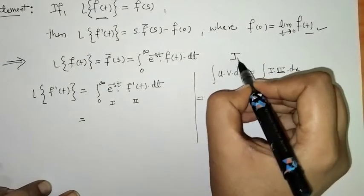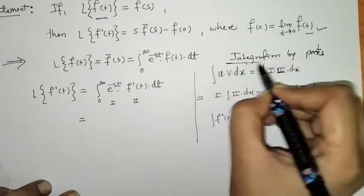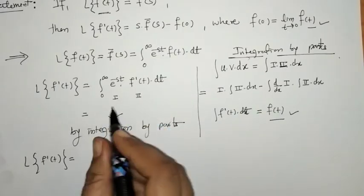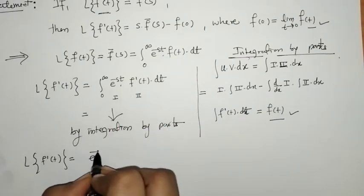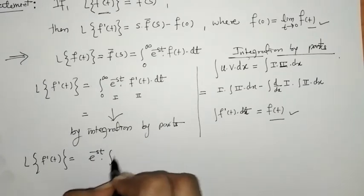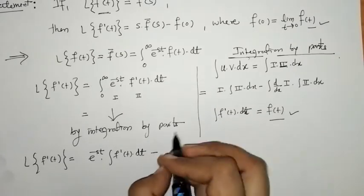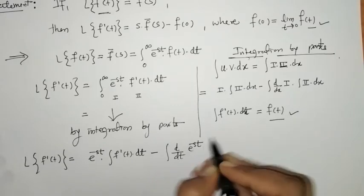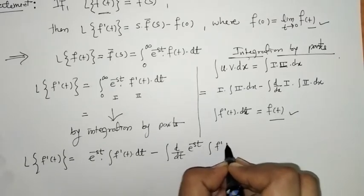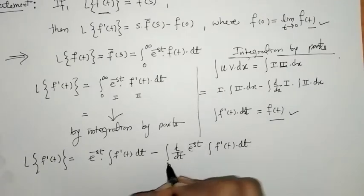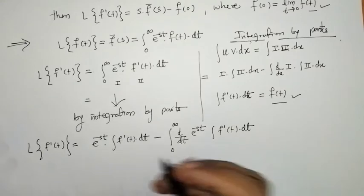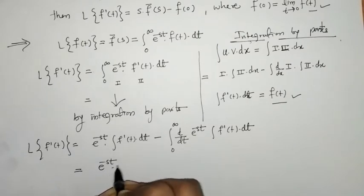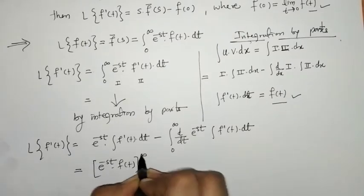Applying integration by parts: we have the first function e raised to minus s t, times the integral of the second function f-dash of t — which gives f of t — evaluated within limit 0 to infinity, minus the integral of the derivative of the first function times f of t, with the integral from 0 to infinity with respect to t.